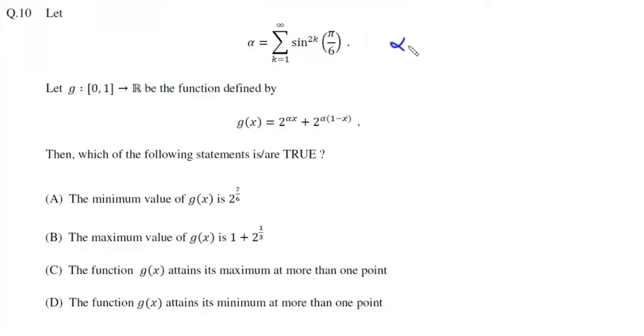Question number 10. We are given alpha which is summation k varies from 1 to infinite, sine pi by 6 to the power 2k. Now sine pi by 6 is 1 by 2, and 1 by 2 squared is 1 by 4, so it will be simply 1 upon 4 to the power k where k varies from 1 to infinite.